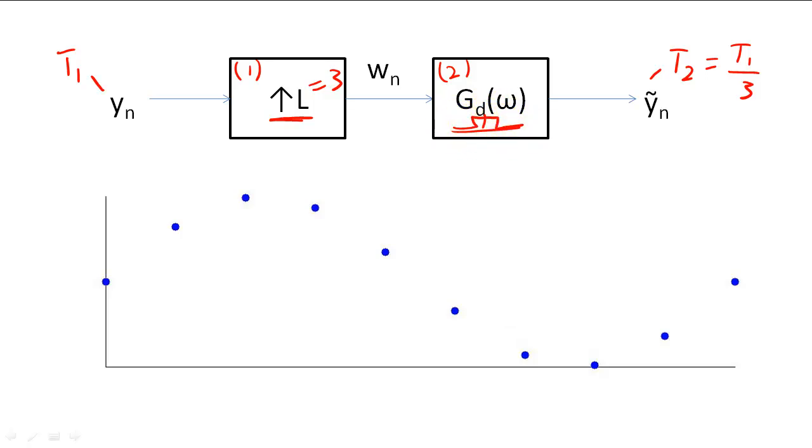When we upsample a signal, we simply add L minus 1 zero samples in between the samples of Y of N.